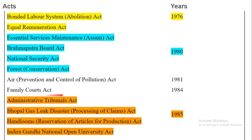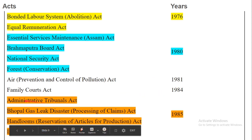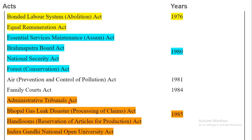Family Courts Act was passed in 1984. Administrative Tribunals Act, Bhopal Gas Leak Disaster Processing of Claims Act, Handlooms Reservation of Articles for Production Act, and Indira Gandhi National Open University Act — these four acts passed in 1985.